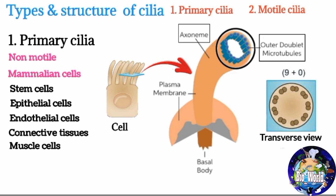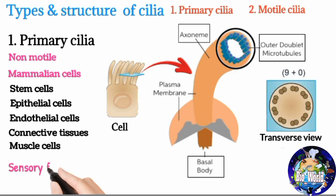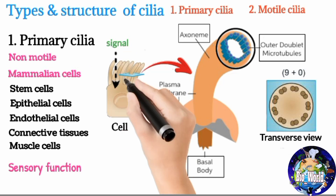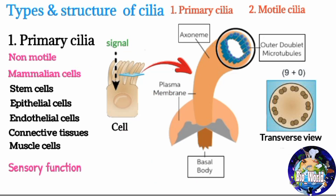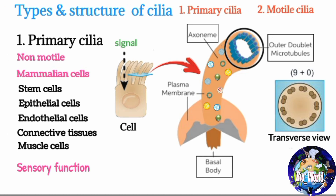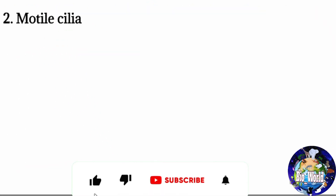The cilia are anchored to the cell by means of a basal body. Primary cilia are not associated with motility but are involved in sensory functions. These cilia act as antennae that receive signals from the environment, which are then transferred to the cell. The ciliary membrane contains various receptors, channels, and signaling proteins that are involved in this process.